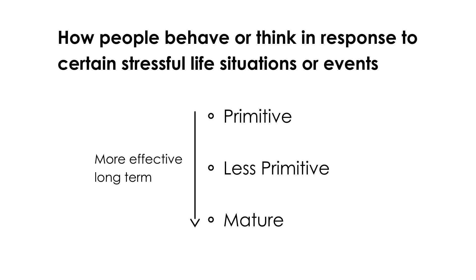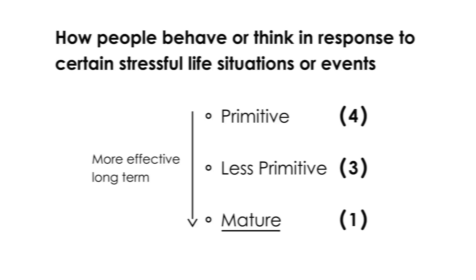Primitive is something that you do to compensate short term but it's not very effective long term. You want to get into the mature category to have a defense mechanism that is appropriate in coping with the stressful life event long term. I'll go through four that are primitive, three that are less primitive, and one that's mature. Let's start with the primitive defense mechanisms.